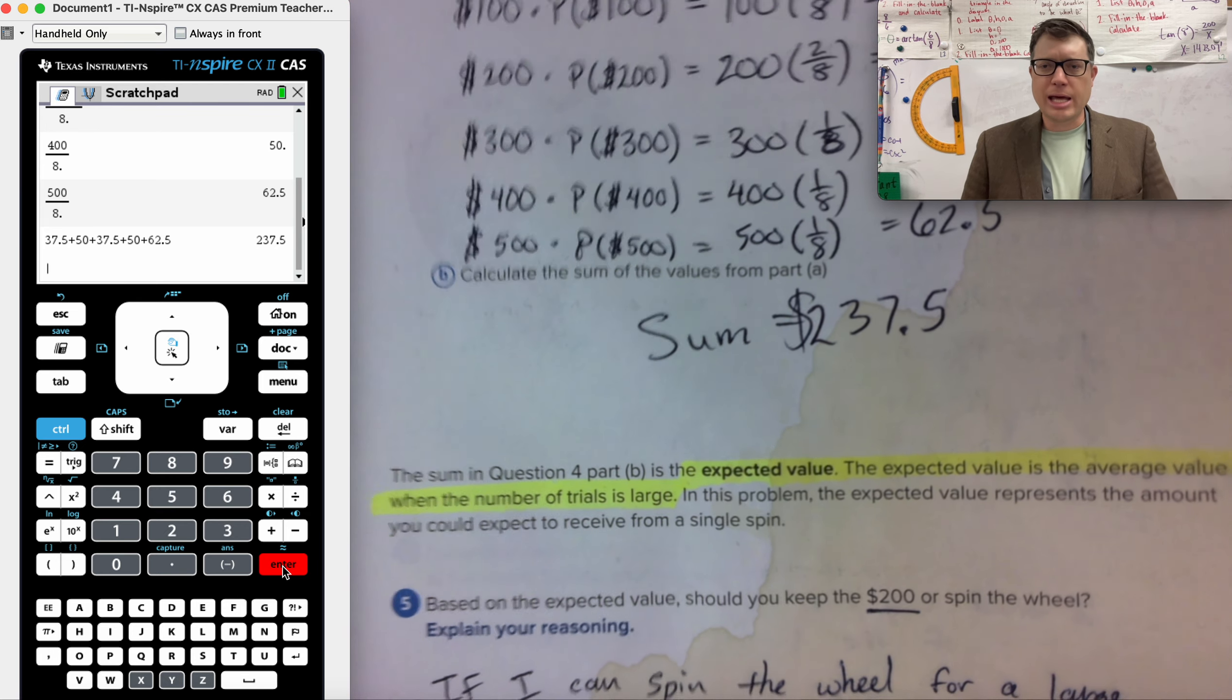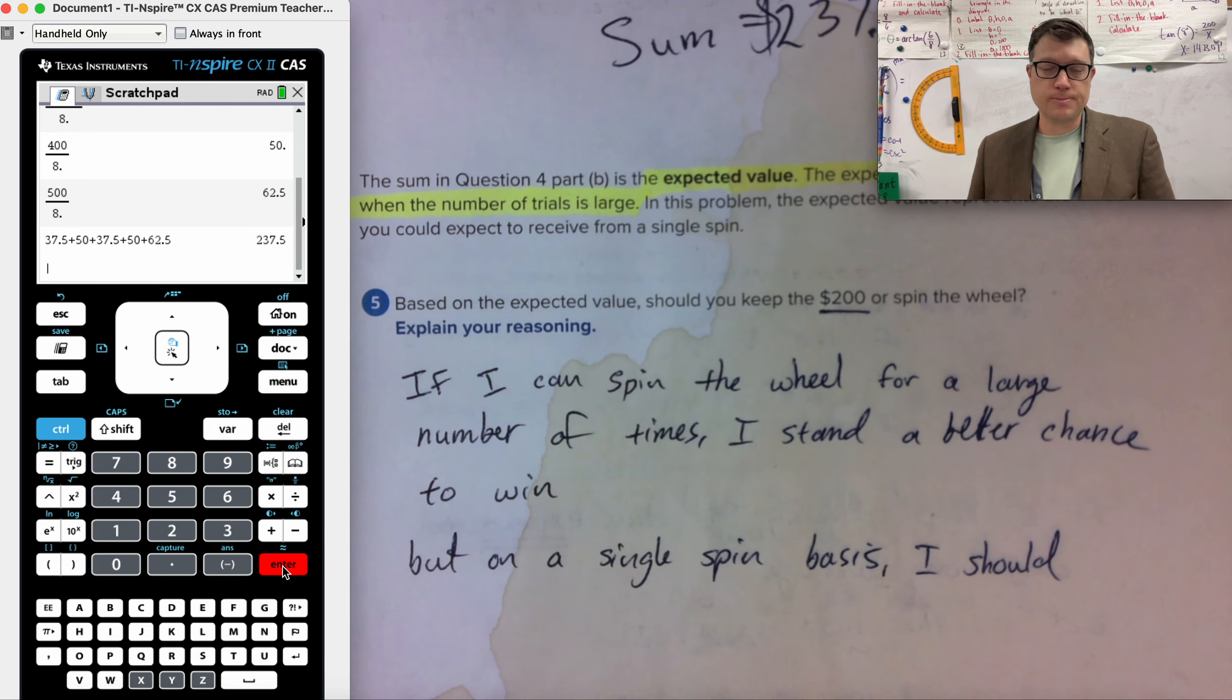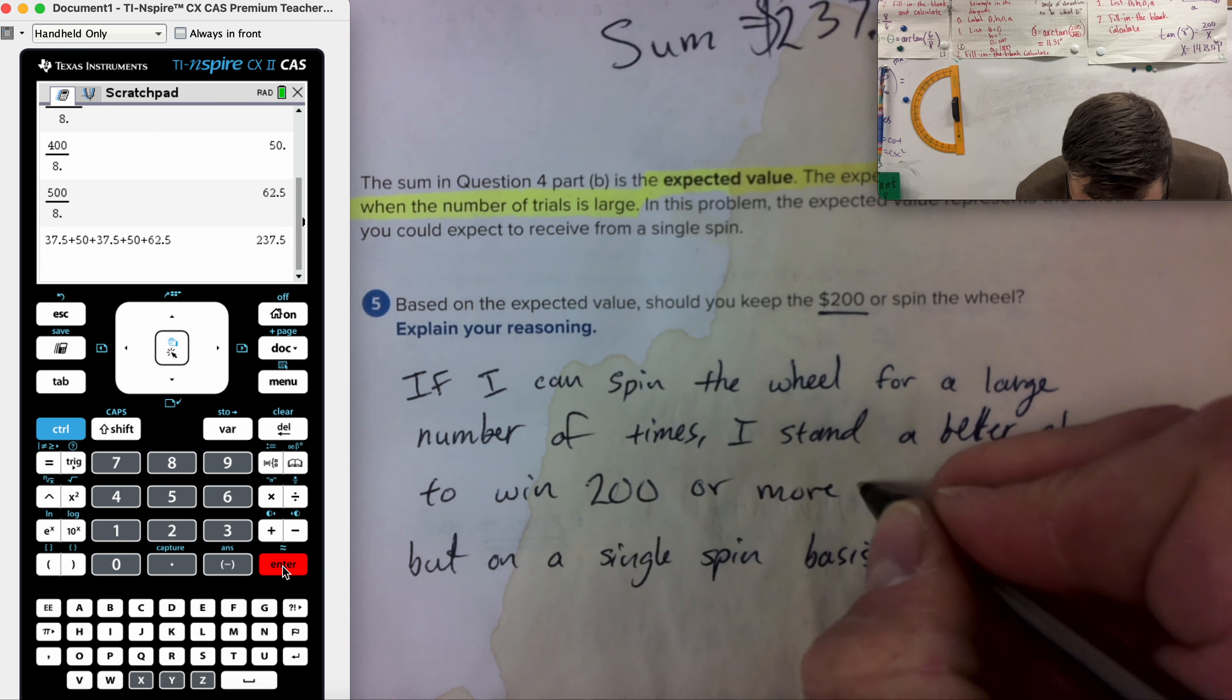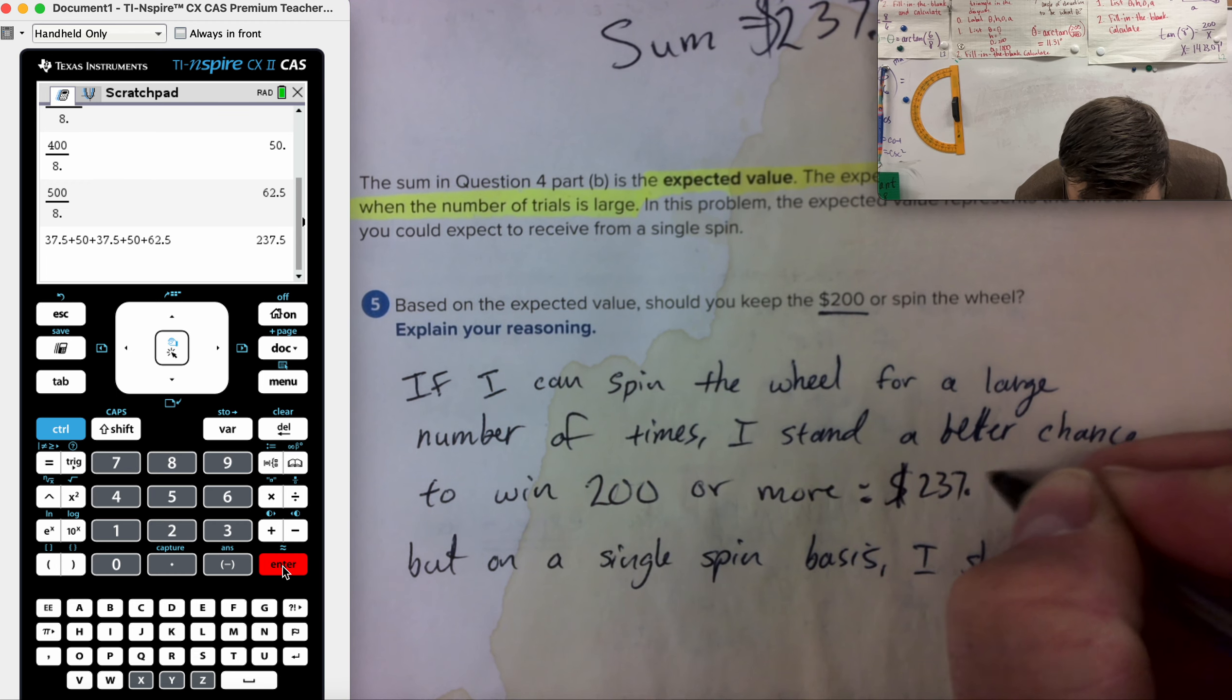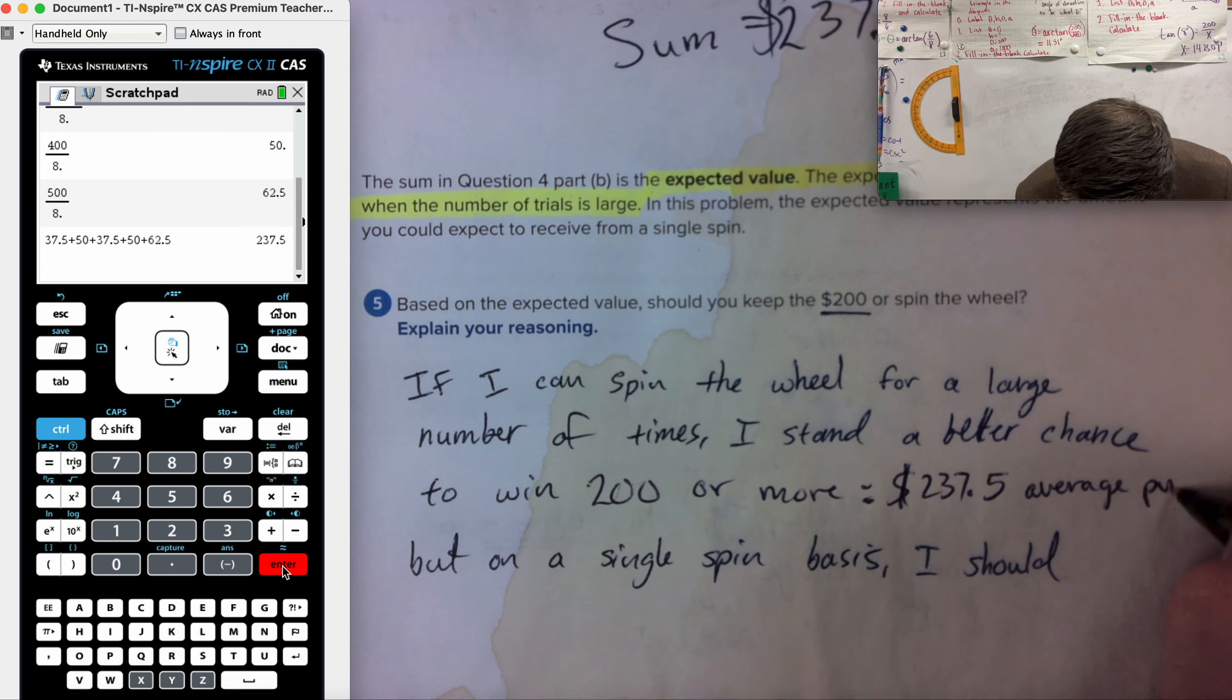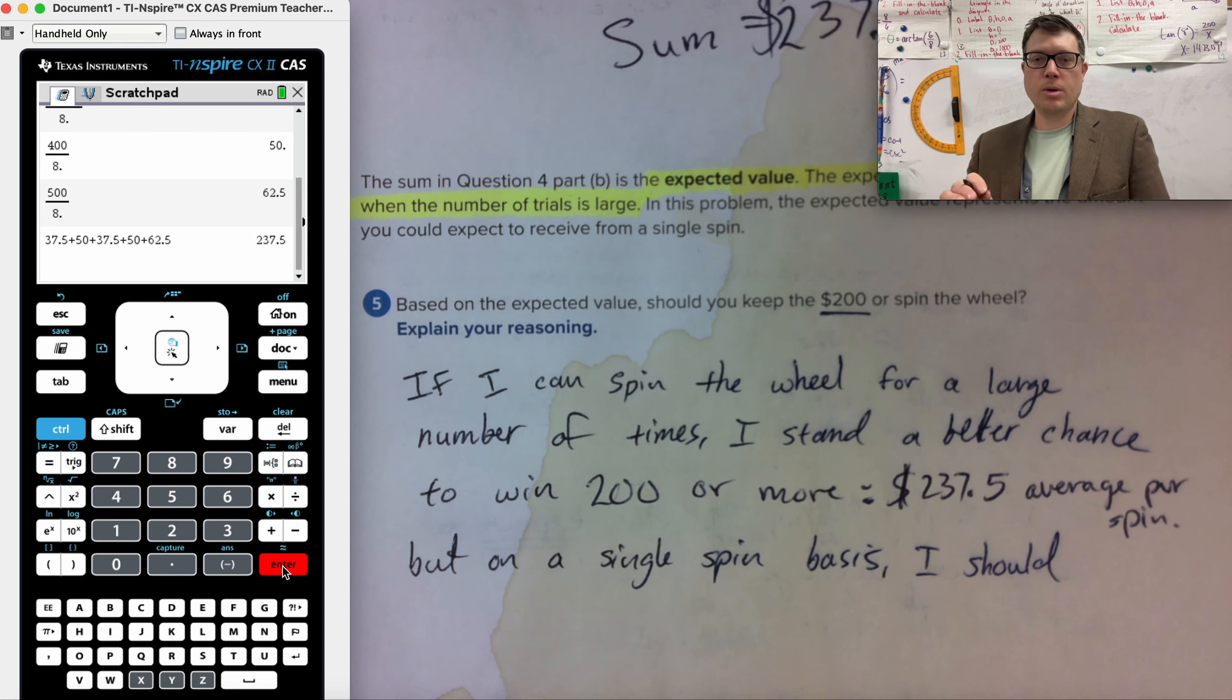Should you keep the $200 or spin the wheel? And I say this, my line of thinking, if I can spin the wheel for a large number of times, like if I'm that contestant spinning and spinning and spinning, or if I'm just looking at the collected average of everyone that's participated, that expected value is bigger than 200. I should spin. I stand a better chance to win 200 or more. Specifically, $237.5 on average per spin.